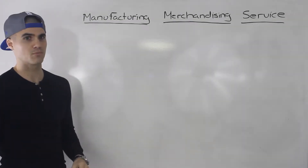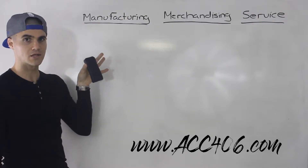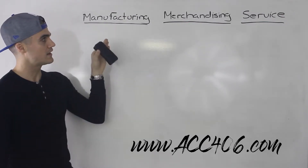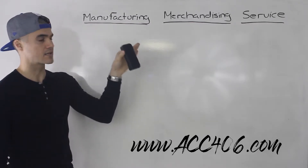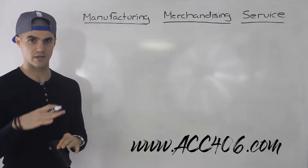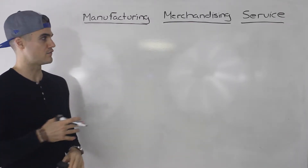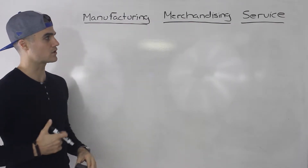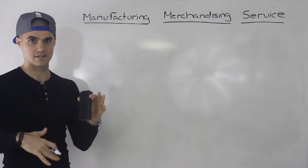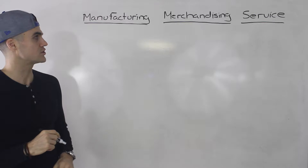Welcome back. Patrick here. Moving on to the next video, I want to talk about three common types of companies you're going to run into in this course: a manufacturing company, a merchandising company, and a service company. I'm not going to go into crazy detail — I just want to give you a general overview of how all three work. I think it's always helpful to have a general overview before getting into specifics, as it allows you to file things in your head more efficiently.